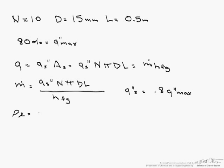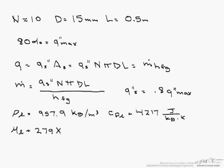Our rho sub l is 957.9 kg per m³, that's the density of the liquid. The heat capacity of the liquid is 4217 joules per kg K. The viscosity of the liquid is 279 times 10 to the minus 6 newton seconds per m².